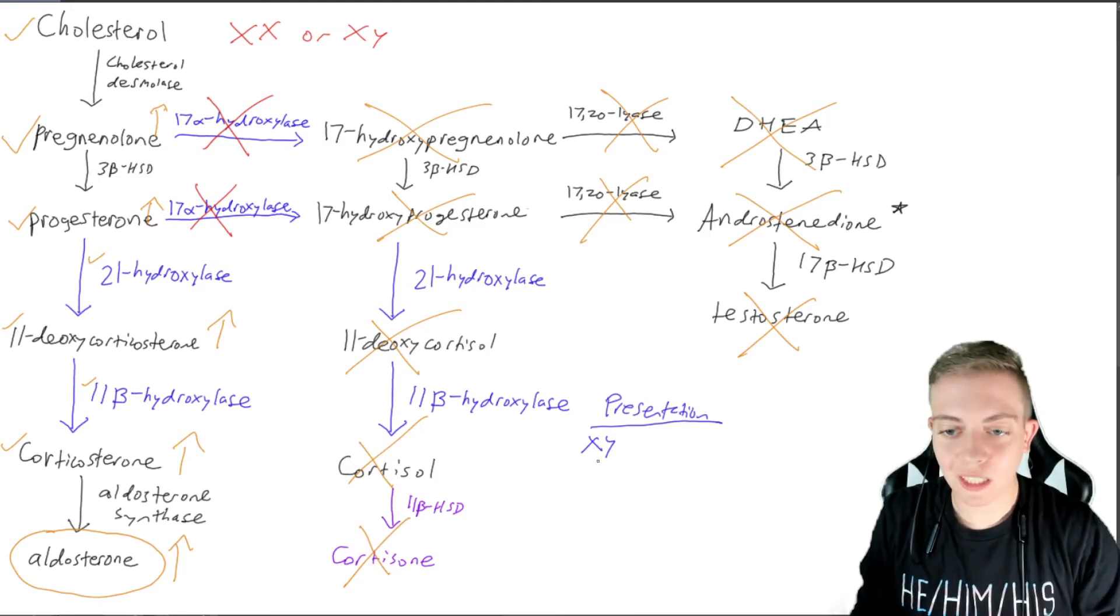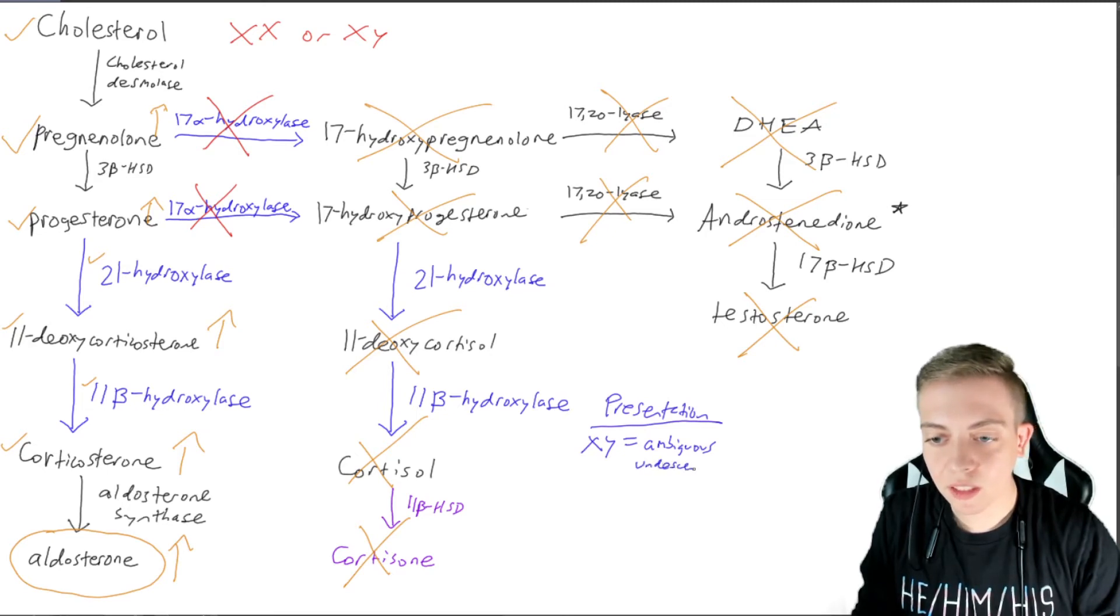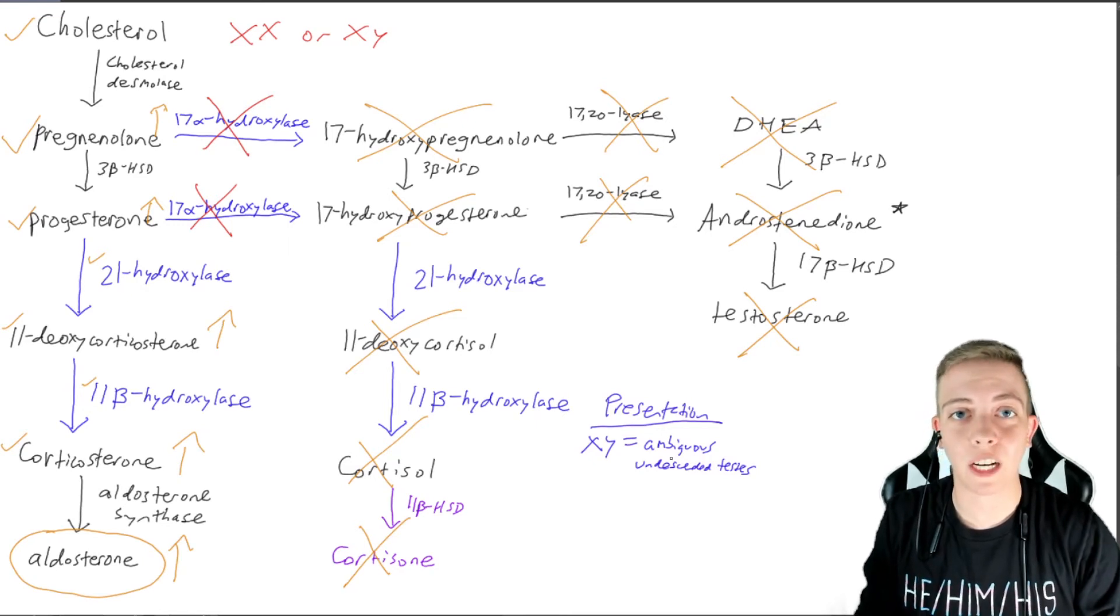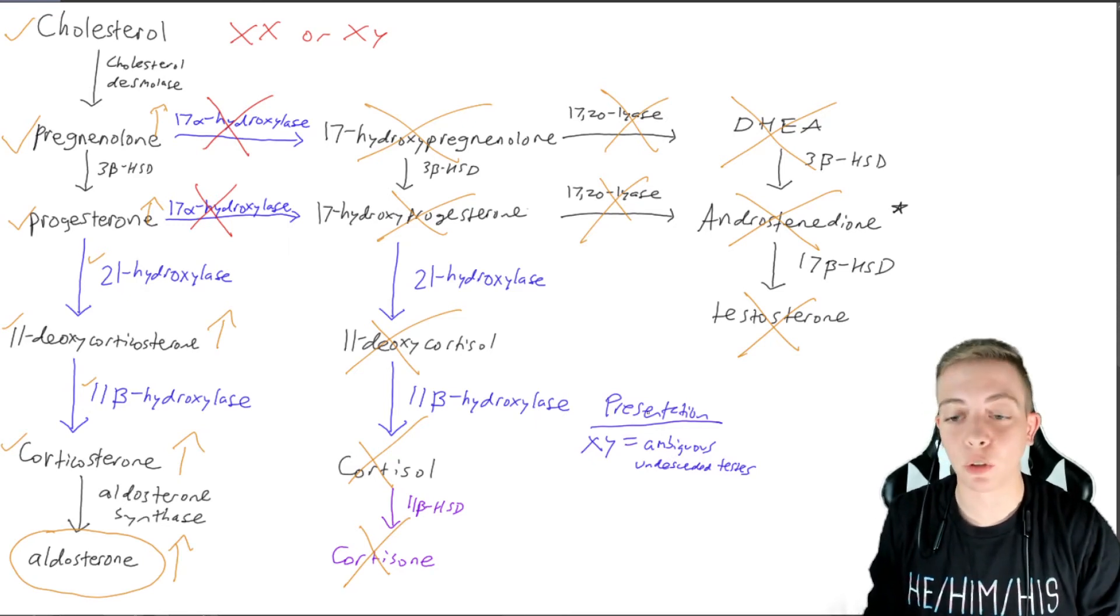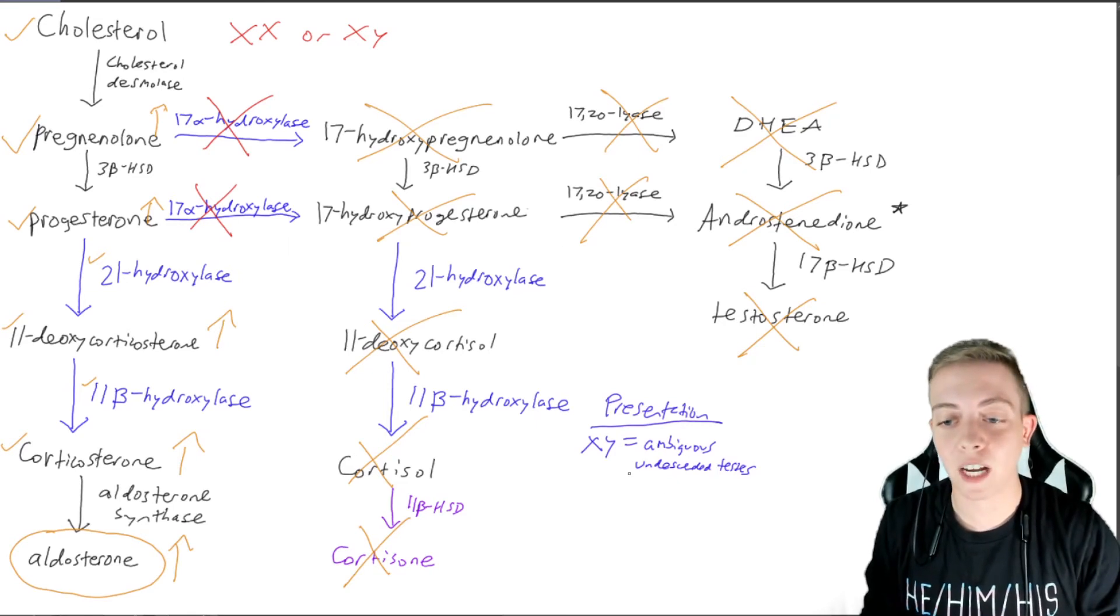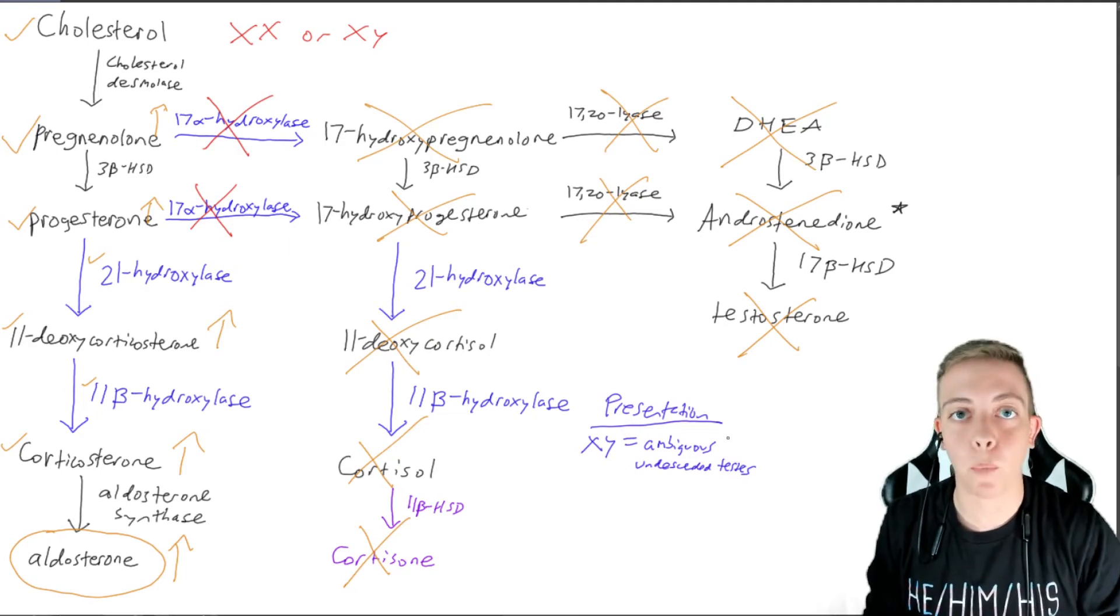Let's say we have an XY fetus that has an SRY. So we're going to assume that this is XY plus SRY. They're going to have ambiguous genitalia, and they're also going to have undescended testes, because testicular descent is related to testosterone and related to DHT. That is what stimulates the testes to descend. So we're going to have testes inside of the abdominal cavity, and we're going to have ambiguous genitalia. It's going to appear more feminine than what you would typically see with an XY fetus.